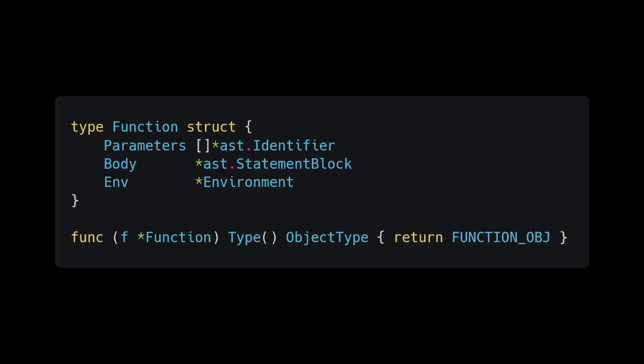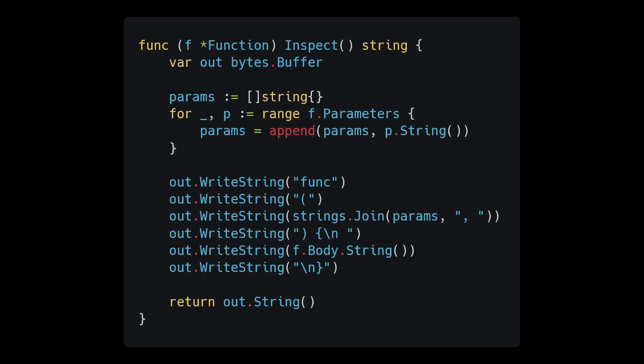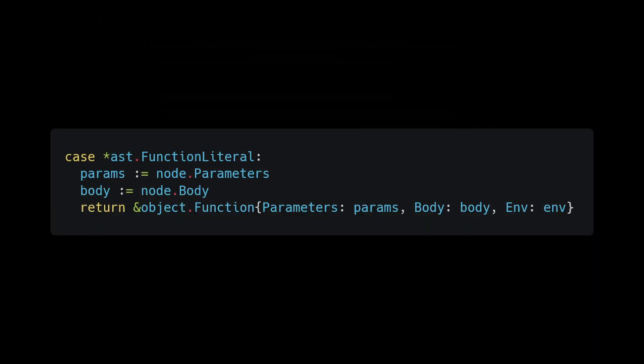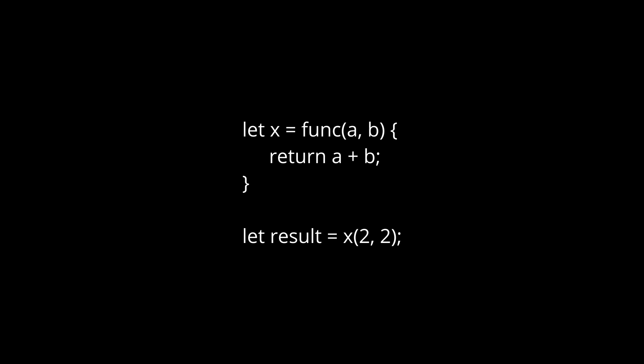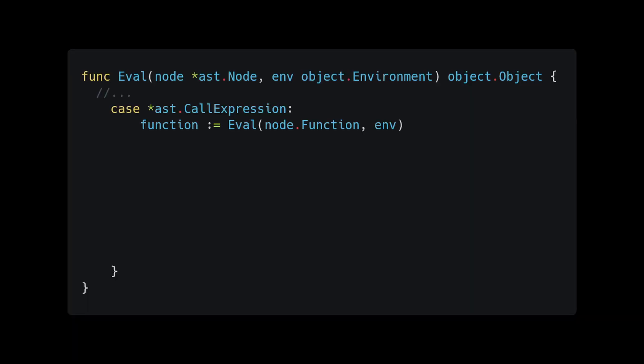Go back to your evaluator package and add a case to the eval function for function literals. In the body, grab the parameters and body from the node and create a new function object with those values — for now we'll keep using the current environment. This takes care of evaluating the function definition, but now we need to evaluate function calls themselves. Add a switch case for call expression nodes — at the moment all we're doing is calling the evaluation method we just wrote to retrieve the function.